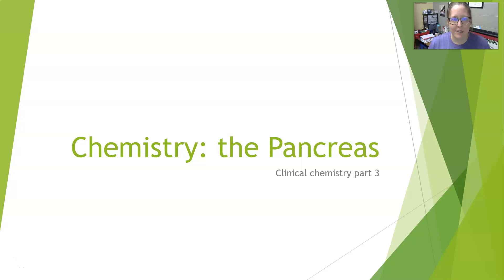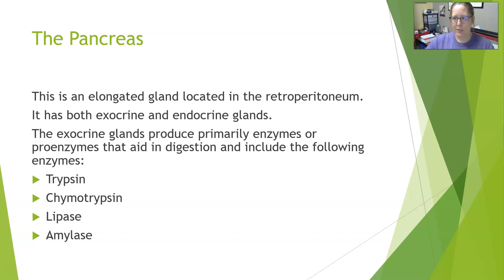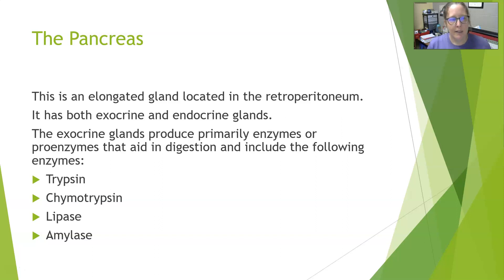Hi guys, this is Dr. A with Chemistry Basics. We are going to look at the pancreas. The pancreas is an elongated gland located in the retroperitoneum, down deep, close to the back.